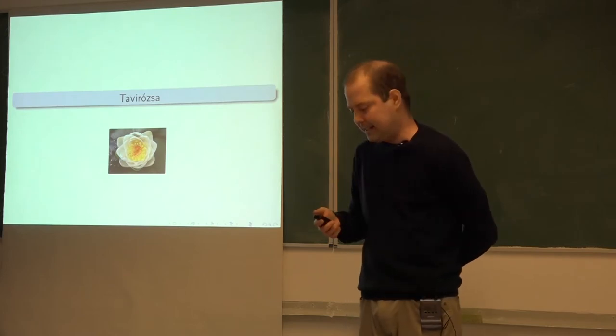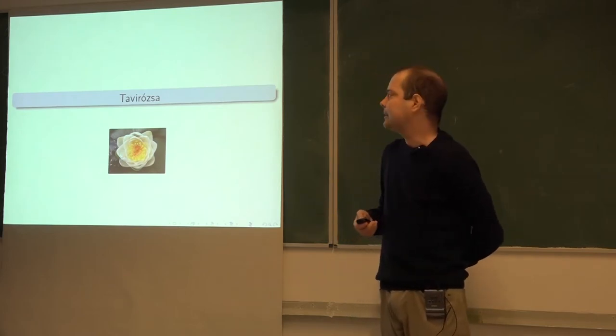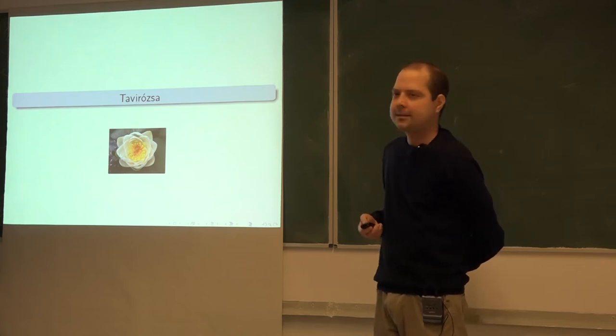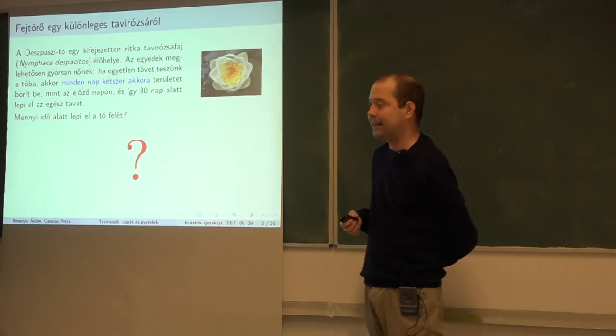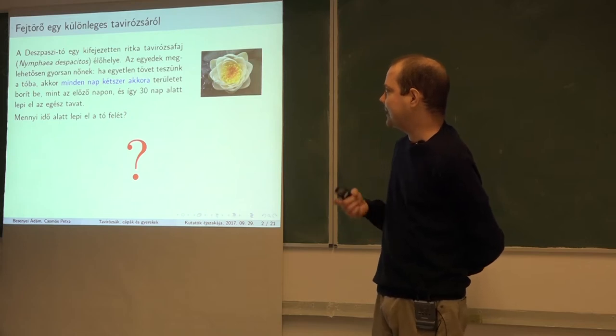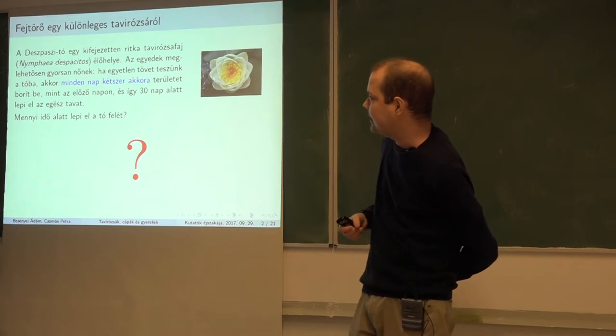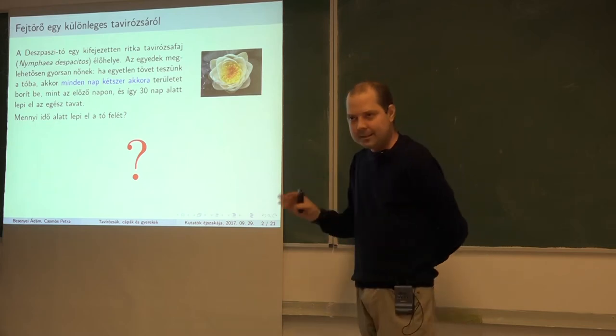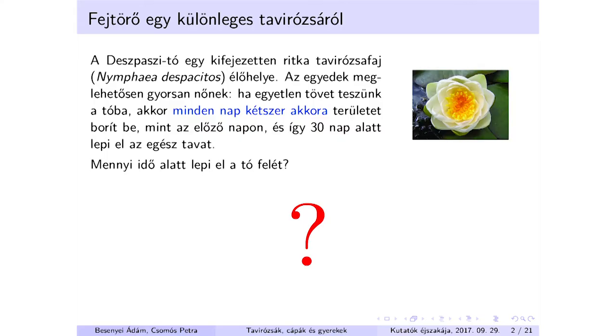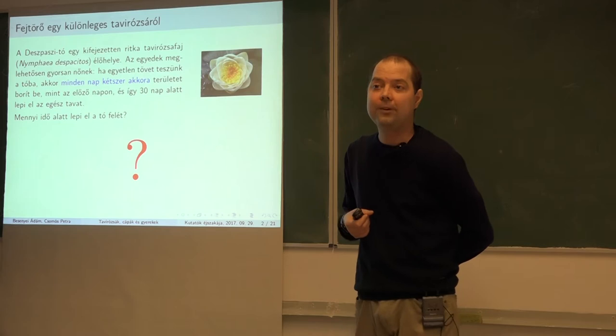Hát akkor kezdjünk bele, és először is jön a Tavirózsás. Hát ez egy olyan feladvány, amit szerintem mindenki hallott már valamit, vagy az általános iskolában, de lehet, hogy már az óvodában is. És ezt egy kicsit aktualizáltam, tehát fejtörő egy különleges Tavirózsáról. A Despacito az egy kifejezetten ritka Tavirózsa fajnak az élőhelye, még ott a latin neve is, ez a Nymphea Despacitos. A Nymphea az a Tavirózsáknak a nemzetsége. És azt tudják ezek a Tavirózsák, hogy ha egyetlen tövet beteszünk a tóba, akkor minden nap kétszerakkora területet borít be, mint az előző napon, és így 30 nap alatt benövi a tavat. A kérdés az, hogy mennyi idő alatt lepi el a tó felét.